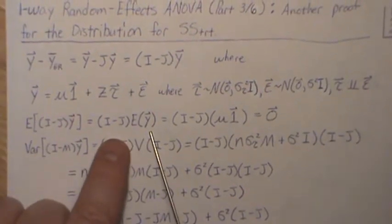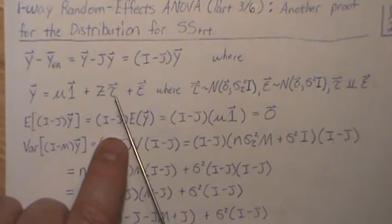Now the expected value of (I - J)Y, this is constant so it comes out front. Expected value of this, remember that's zero, zero, so we're just left with this.